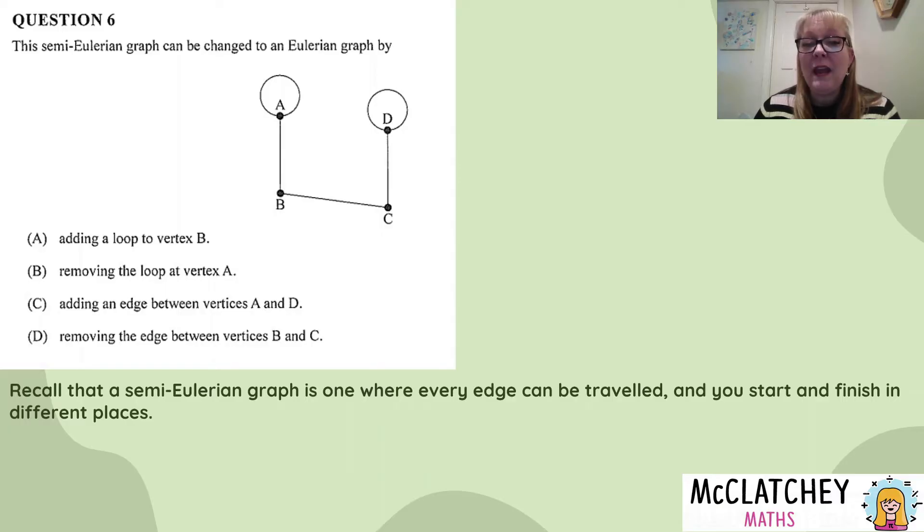Remember, it's one where every edge can be traveled and you're going to start and finish in different places. If I look at this particular graph, I can prove to myself it definitely is semi-Eulerian. If I start at point A, I go around the loop, down to B, C, D,